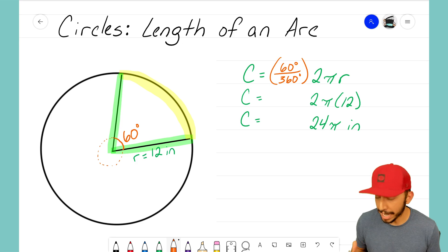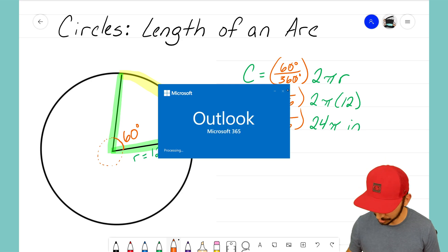Well, 60 over 360 is a fraction that we can reduce. These zeros are going to cancel. I'm left with 6 over 36, and that reduces to just 1 over 6. So I know that this sector here is 1/6 of the circle. Really, 6 of those can fit in. Now judging by my picture, it does not look like I made a 60-degree angle.